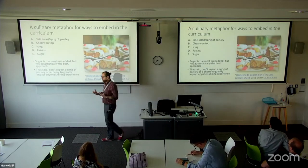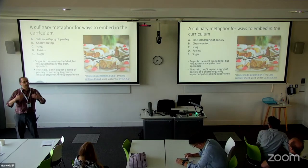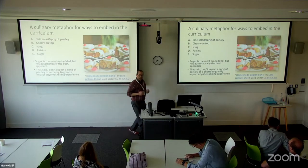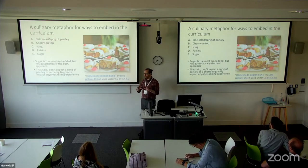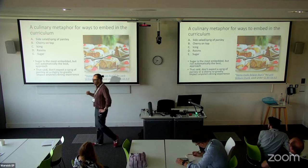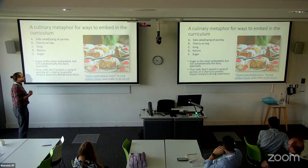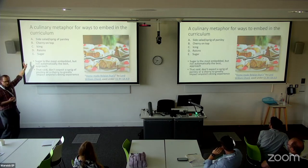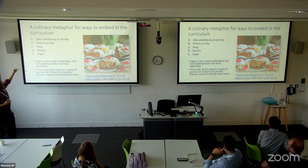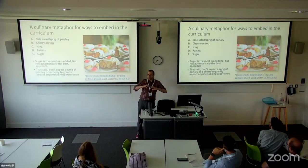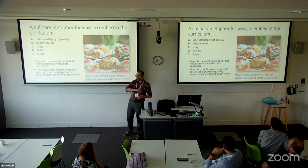Trying to think about how you can represent the key concepts when it comes to embedding digital literacy in the curriculum — which is the thing I'm really interested in — I started with a long list of concepts and narrowed it down to avoidability and regularity, with visibility linked to avoidability. I like food metaphors. You can break it down into different ways of thinking about it, almost like a cake. So — do you have a side salad or a sprig of parsley? There's a developmental opportunity there, but it's quite self-contained, one or two specific things, and relatively easy to avoid.